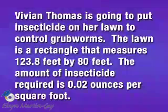Vivian Thomas is going to put insecticide on her lawn to control grub worms. The lawn is a rectangle, remember that, that measures 123.8 feet by 80 feet.